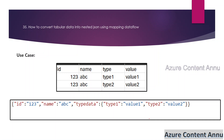Let's see the requirement in detail. The input dataset has four columns: id, name, type, and value, with two records. We want to convert this tabular data into JSON format as key-value pairs — the first key-value pair is the id column with its corresponding value, and the second is the name column with its value.